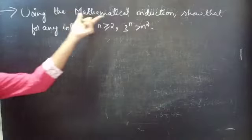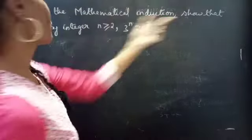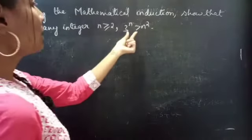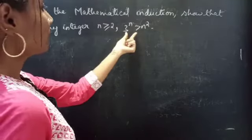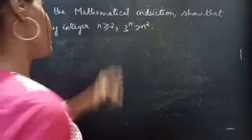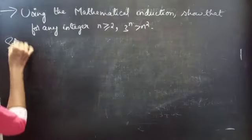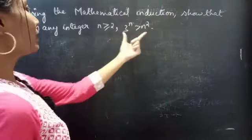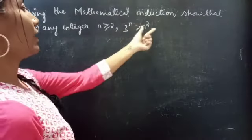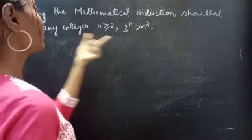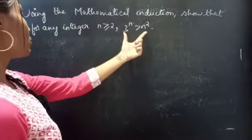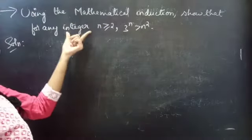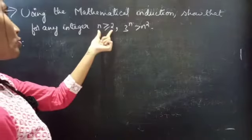Problem: using mathematical induction, show that for any integer n greater than or equal to 2, 3 to the power n is greater than n squared. We are given the statement 3^n > n² and we have to show that the statement is true for any integer n greater than or equal to 2.